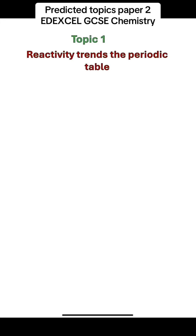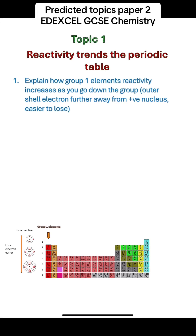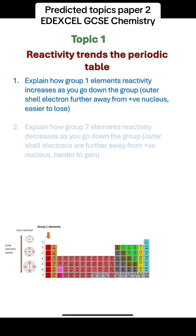Topic 1 is reactivity trends in the periodic table. You should be able to explain how group 1 elements' reactivity increases as you go down the group, because the outer shell of electrons becomes further away from the positive nucleus, so there is less attraction, and so the electron is easier to lose.